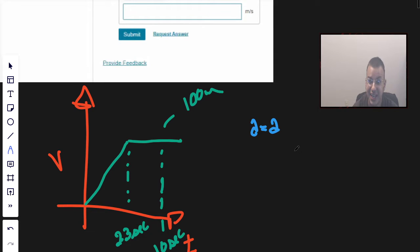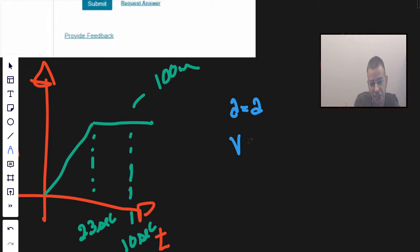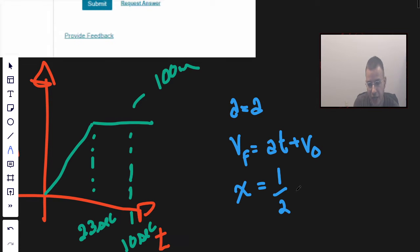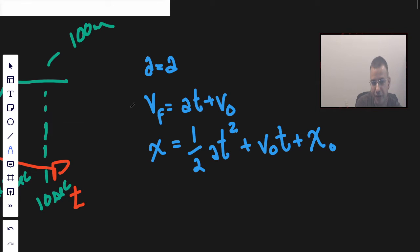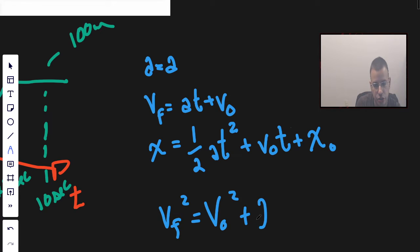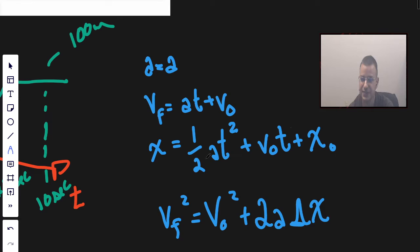I always start by writing a equals a, meaning the acceleration is constant. Velocity final equals acceleration times time plus initial velocity. Position final equals one-half a·t² plus v-naught·t plus x-naught, where a is acceleration. And a fourth equation — really just a combination of the second and third — is v_final² equals v_initial² plus 2a·Δx.